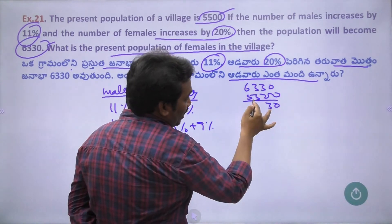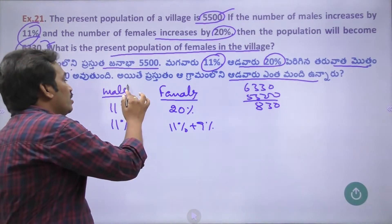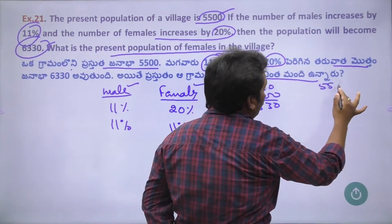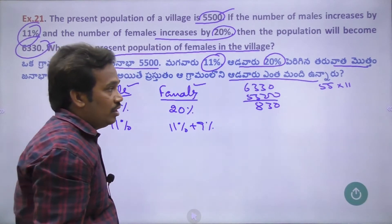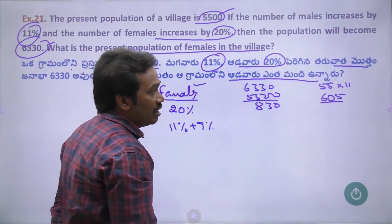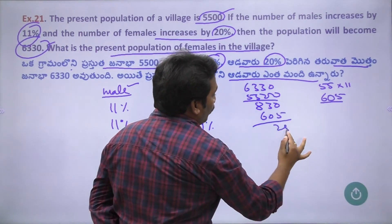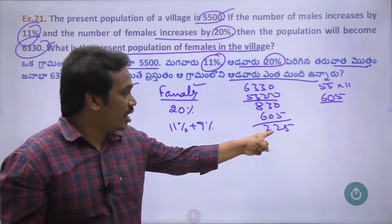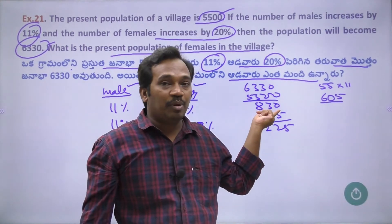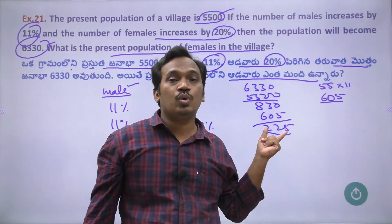What is the 11% increase? The total is 5500, and 830 members increase overall. But if all increased by 11%, that would be 11% of 5500 equal to 605. The remaining 830 minus 605 gives us 225 members extra increase.